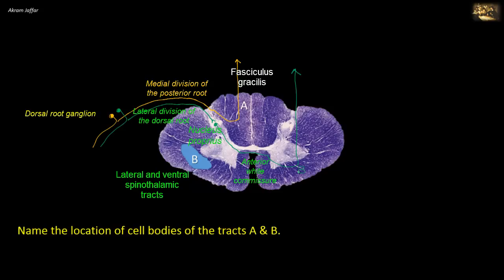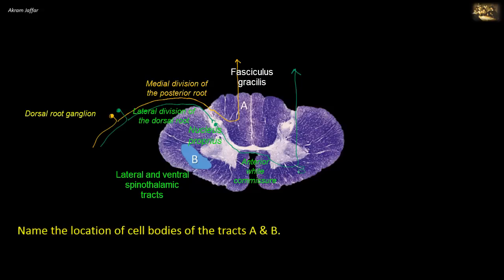As a system — the dorsal column medial lemniscus system — tract A as a whole is crossed, but the crossing takes place in the medulla, not at the level of the spinal cord. Returning to the question: the cell bodies of tract A are located in the dorsal root ganglion, because the tract consists of first-order neurons. Tract B is formed of axons of second-order neurons; the cell bodies are located in the contralateral nucleus proprius, while first-order neurons are in the dorsal root ganglion. So the answer for A is the dorsal root ganglion, and for B is the nucleus proprius.